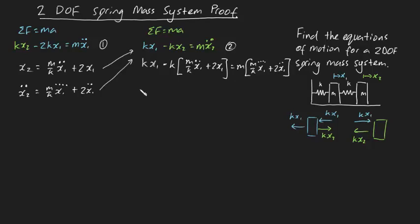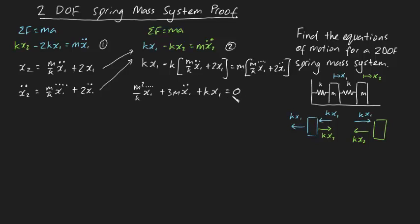Now we've got an expression just involving x1. Tidying this up by bringing everything to one side: (m²/k) x1 quadruple dot plus 3m x1 double dot plus kx1 equals 0. Multiplying k through on both sides gives us: m² x1 quadruple dot plus 3km x1 double dot plus k² x1 equals 0. This shows we need to solve a fourth-order linear differential equation to find the equation of motion for x1.